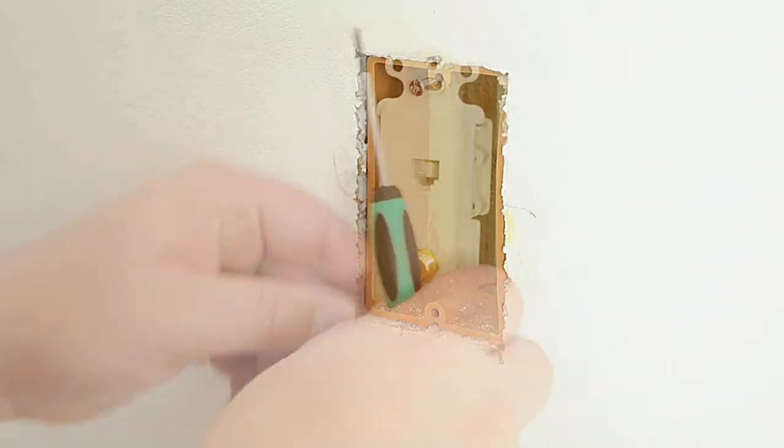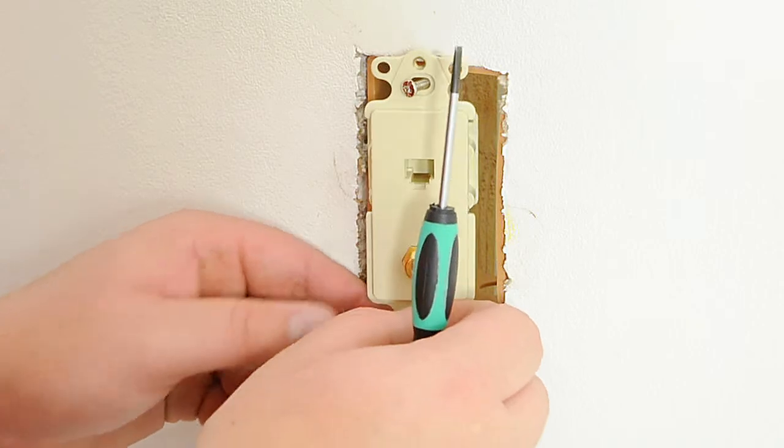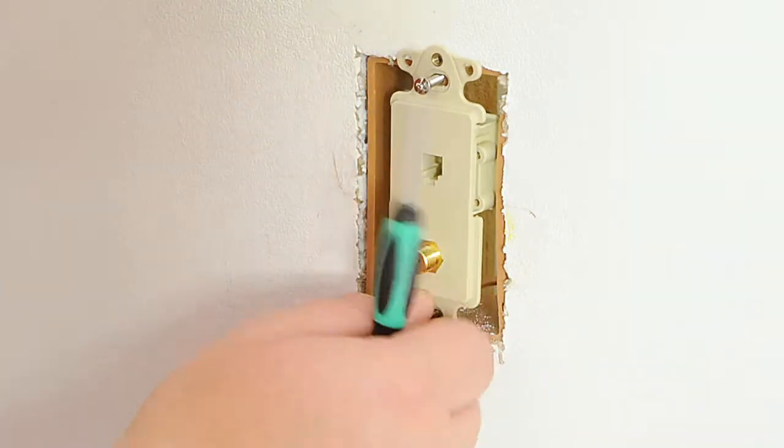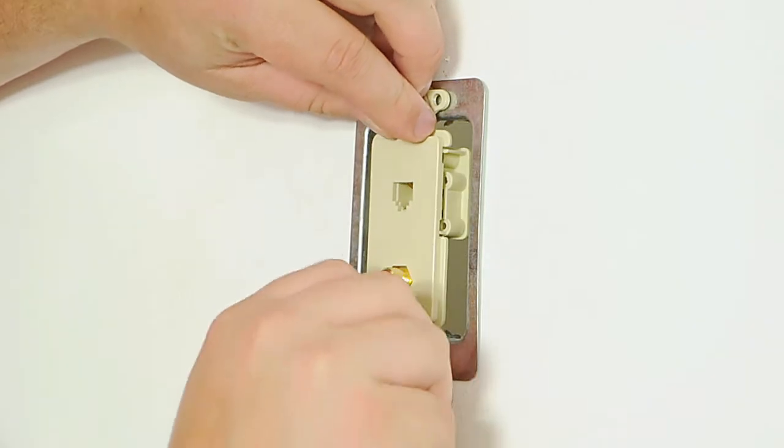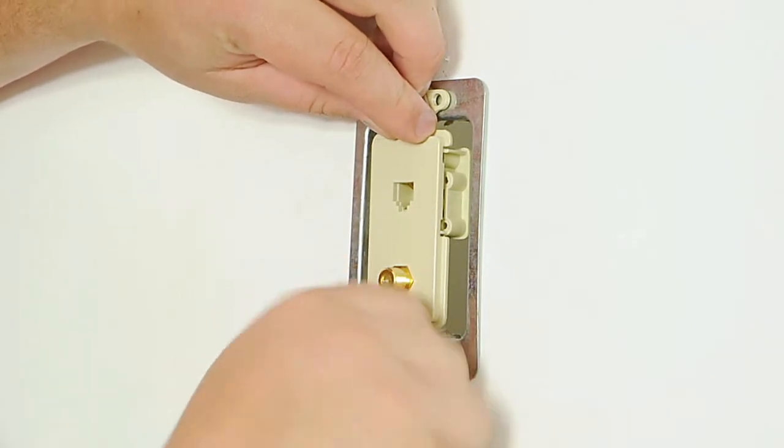This wall plate fits into a standard single-gang box for easy installation. This wall plate can also be installed using a mounting plate, which eliminates the need for a box.